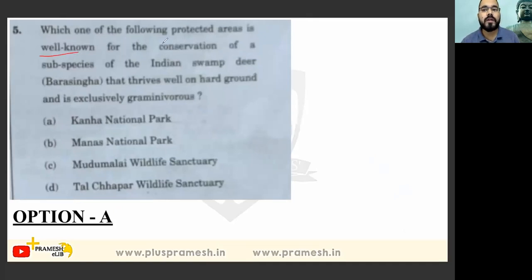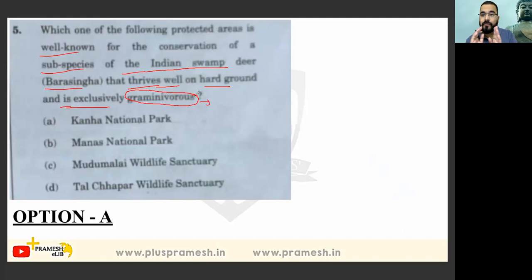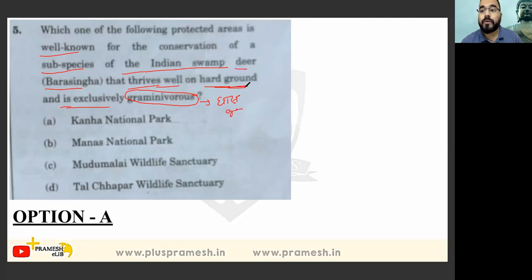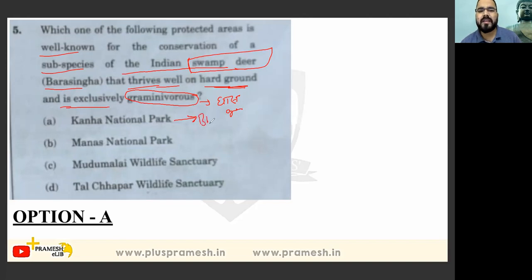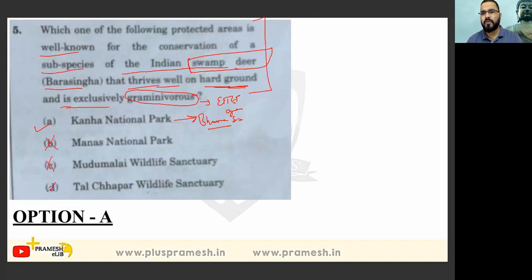Which of the following protected areas is well known for conservation of the subspecies of Indian swamp deer — Barasingha — that thrives on hard ground and is exclusively graminivorous? Graminivorous means it feeds on grass. Barasingha is the state animal of Madhya Pradesh. Kanha National Park fits because of the hard ground and graminivorous conditions, so option B gets eliminated and we arrive at the correct option.